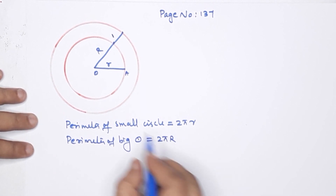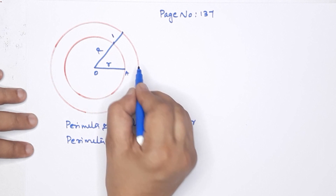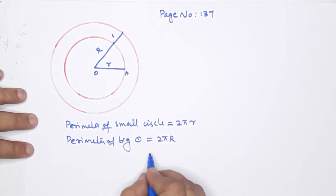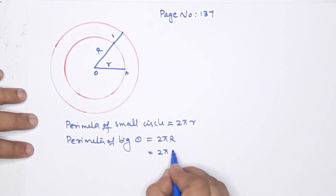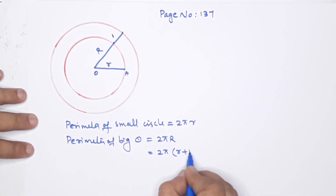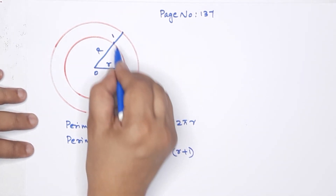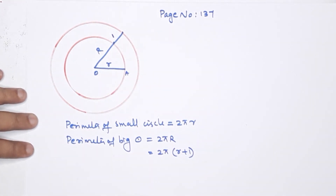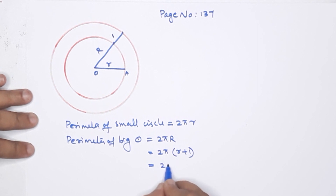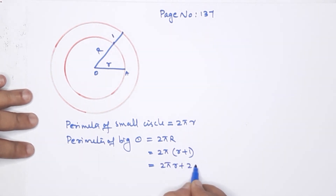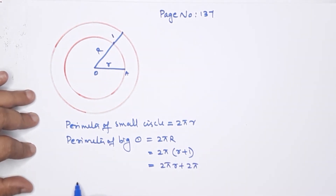Capital R is small letter r plus 1, so 2π(r + 1). Why do we do R plus 1? That means expanding gives 2πr plus 2π.